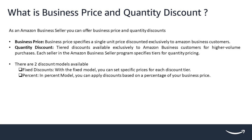First, let us understand what business price and quantity discounts are. As an Amazon business seller, you can offer business price and quantity discounts. Business price specifies a single unit price discounted exclusively to Amazon business customers. Quantity discounts are tiered discounts available exclusively to Amazon business customers for higher volume purchases. Each seller in the Amazon business seller program specifies tiers for quantity pricing.